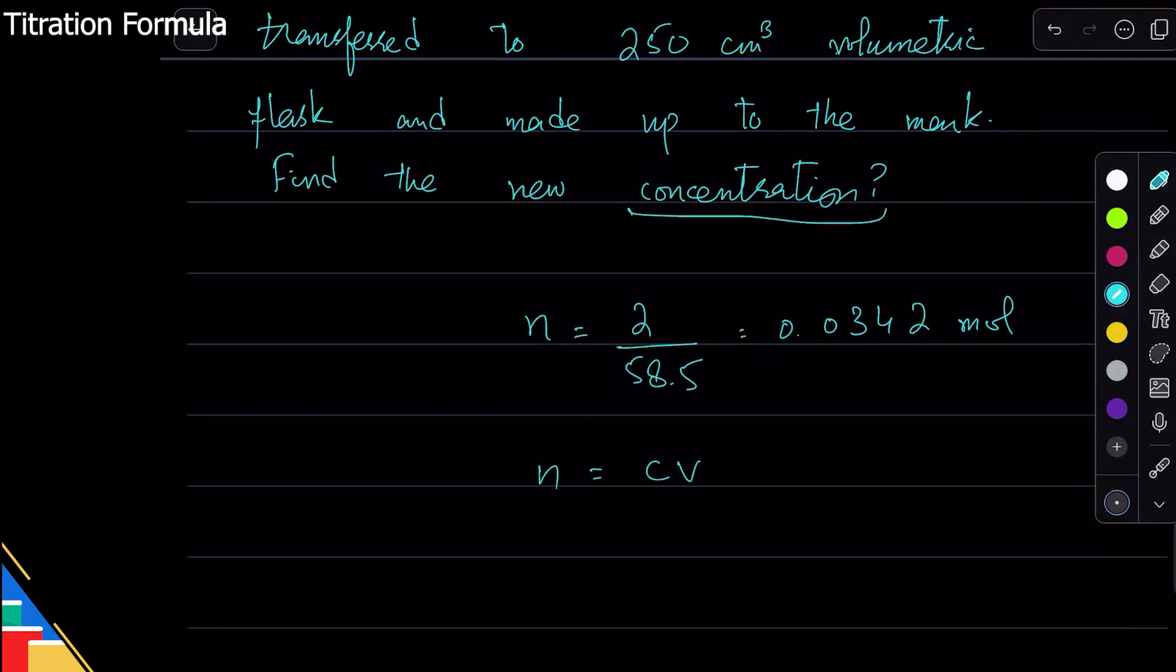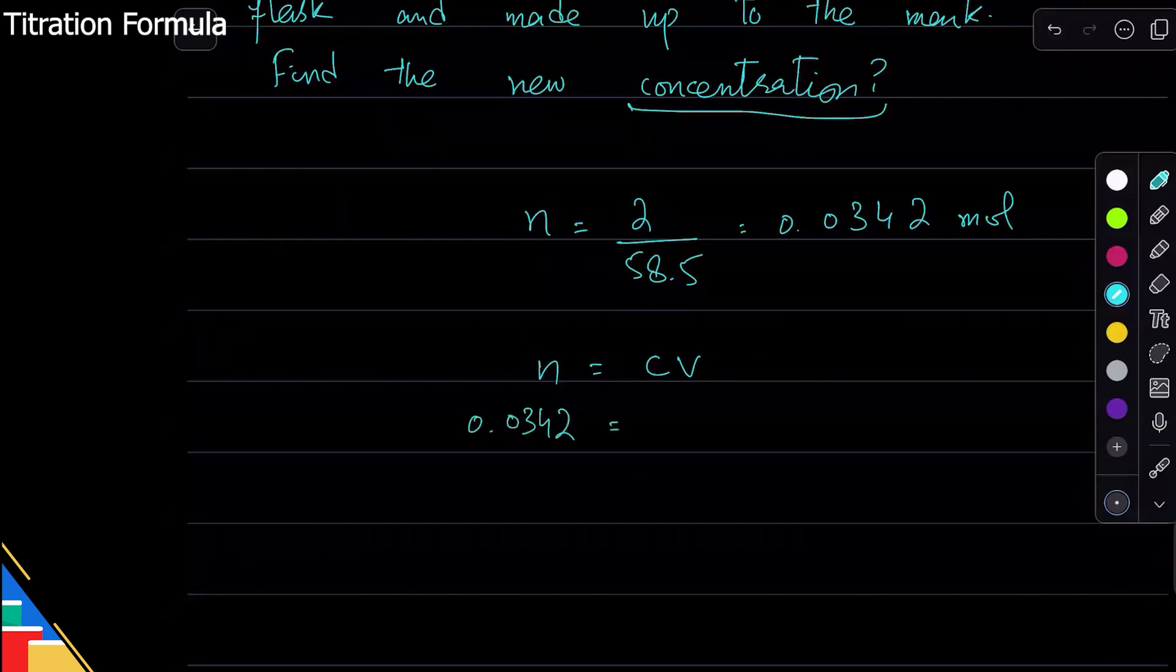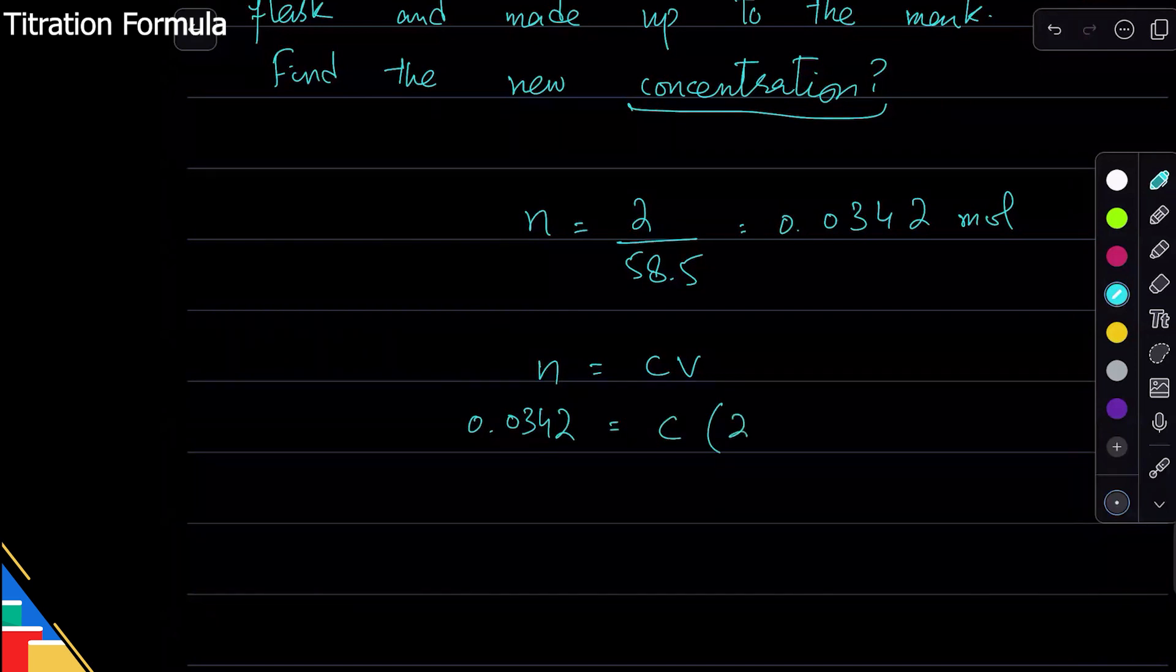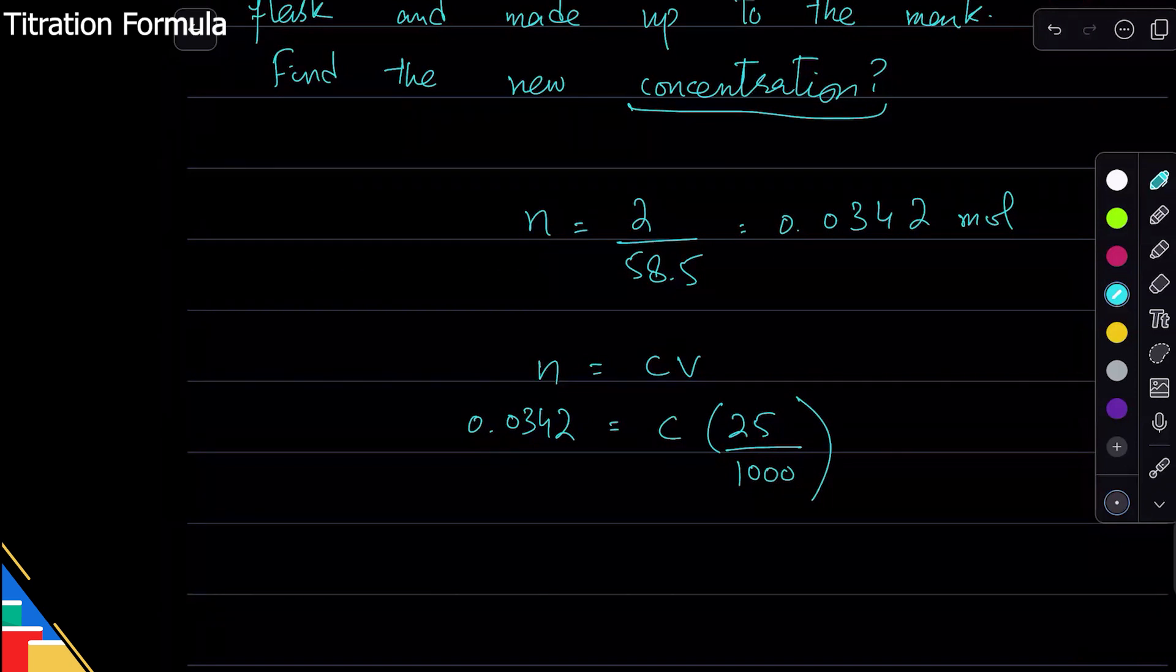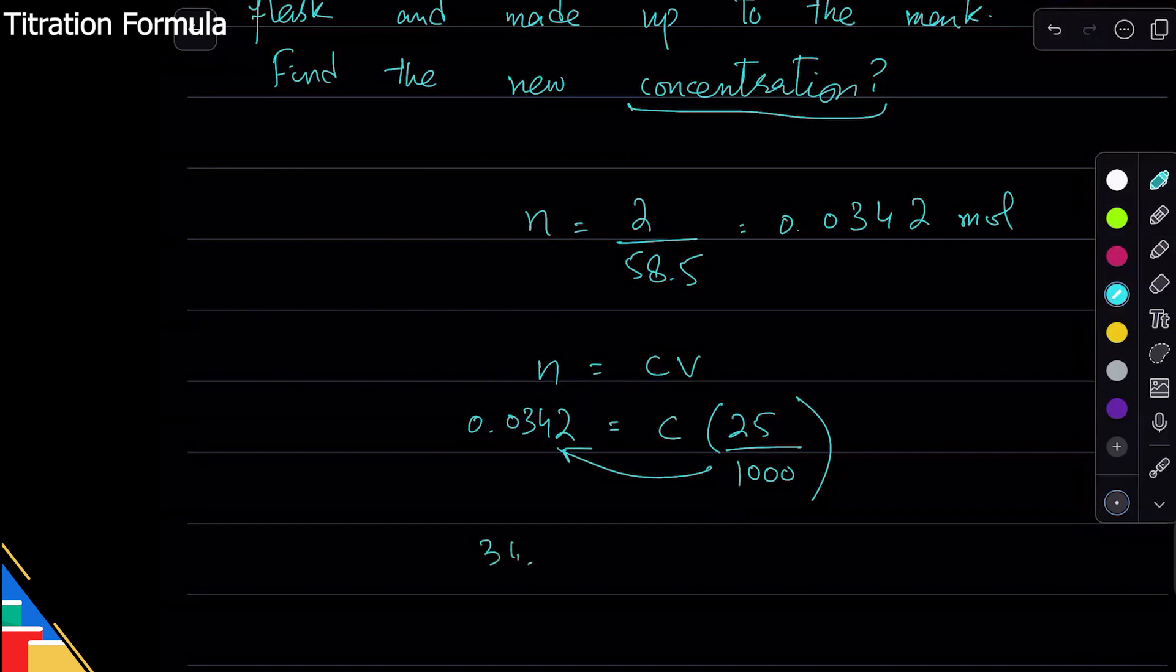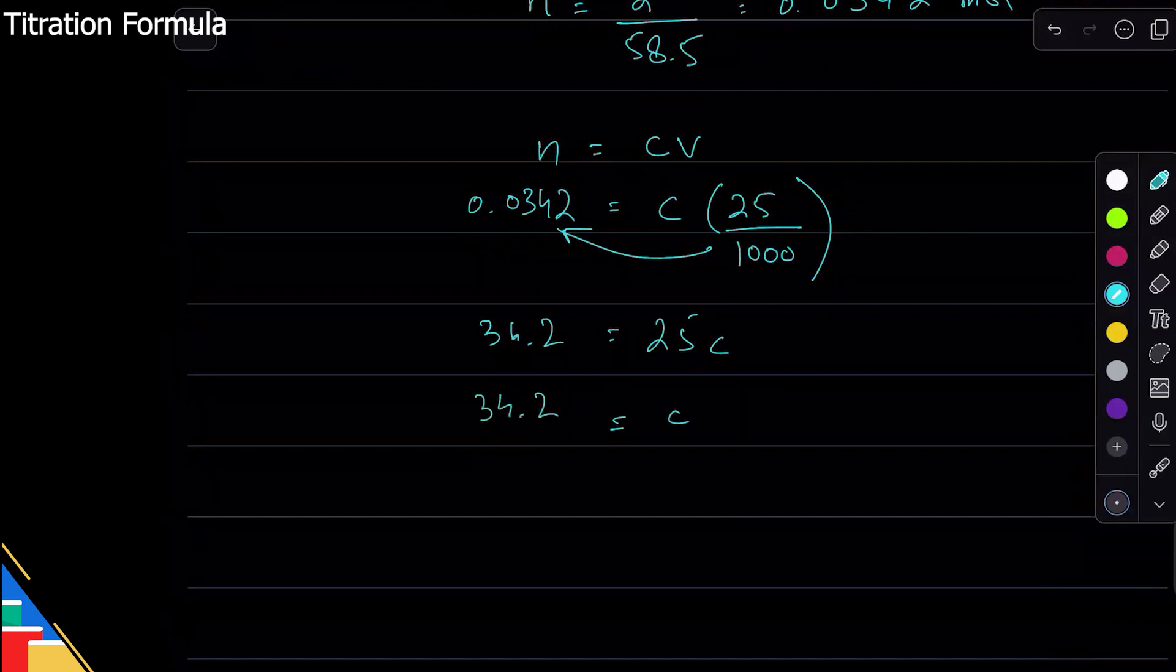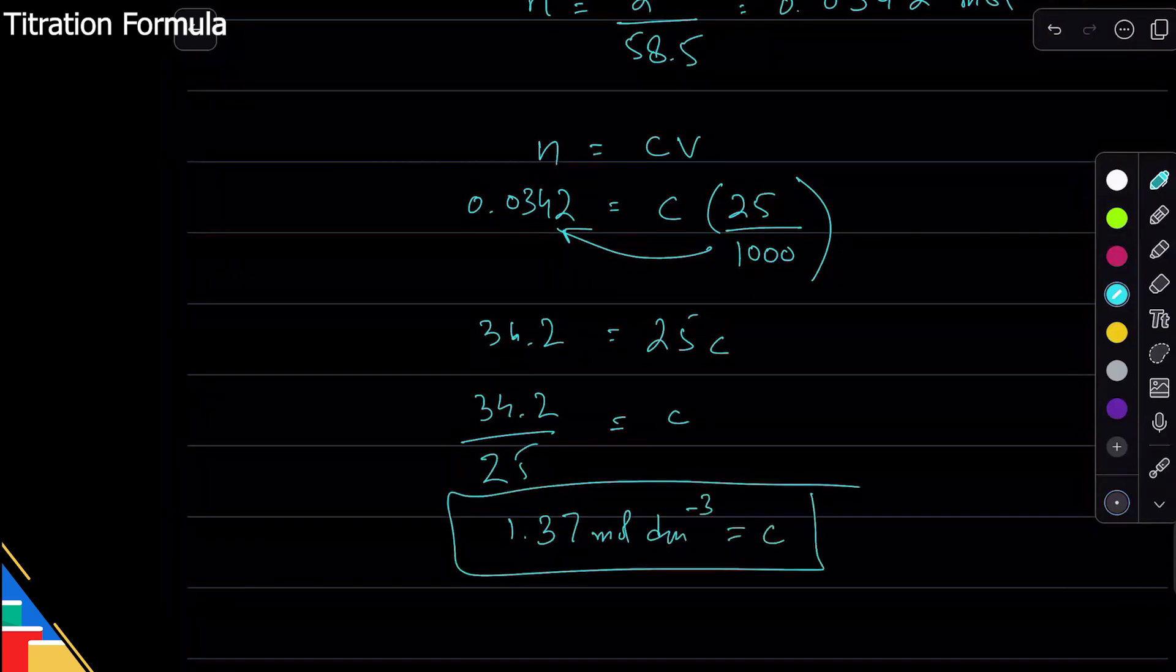n equals CV. Now here's the thing - I just need to figure out the concentration after the water was added. There is a faster way to do this but there's a slower one. Let me show you both. Since I know 0.0342 equals concentration times volume was 25 cm³, so 25 over a thousand, this will give me that the concentration before it was added was simply a thousand multiplied with this. So this will be 34.2 equals 25C. C equals 34.2 over 25, which is 1.37 mole dm⁻³ as a concentration before water was added.